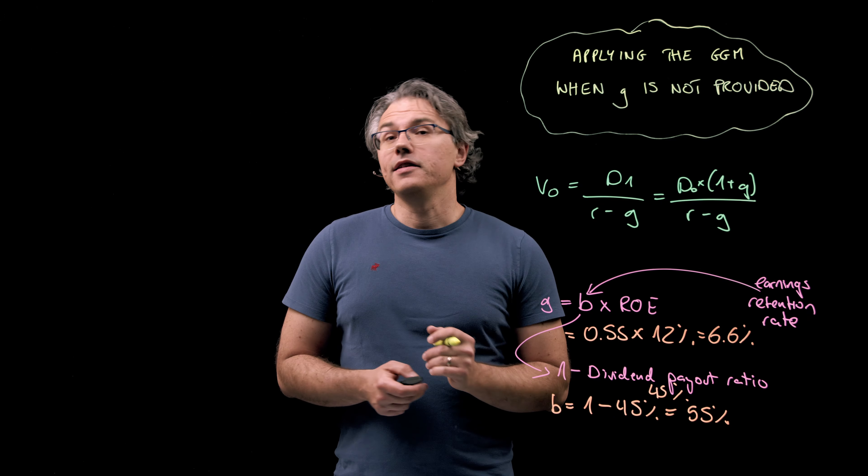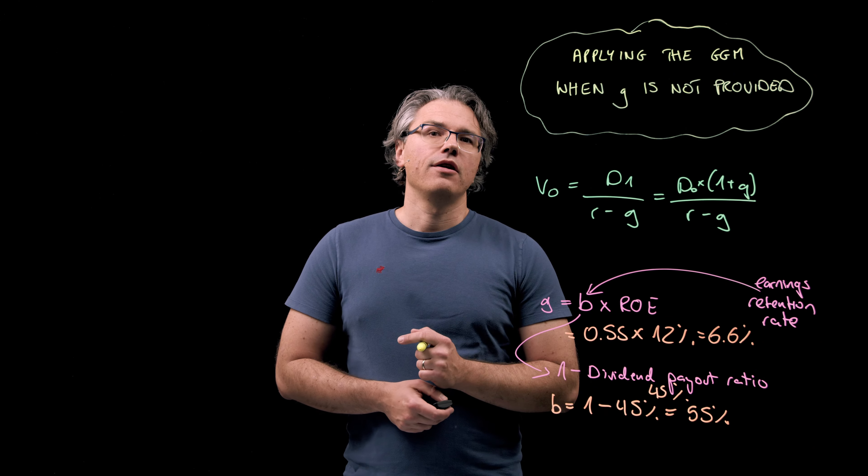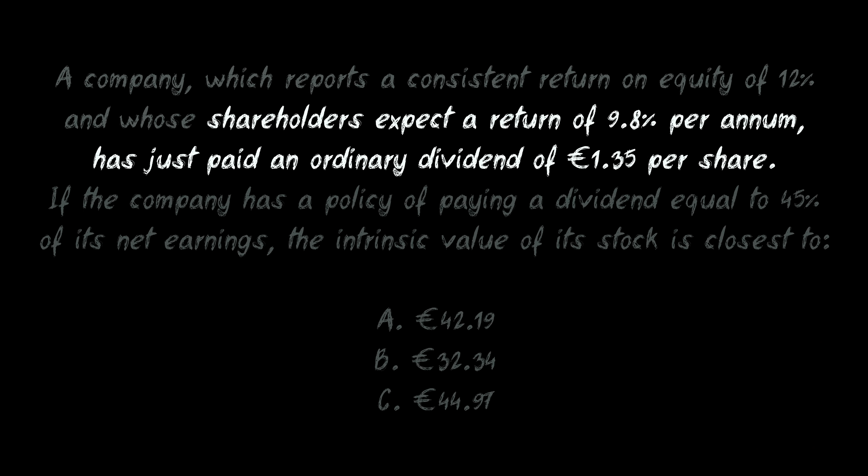Let's quickly check the remaining values from the scenario. Shareholders expect a return of 9.8% per annum, so that's R, and the company has just paid an ordinary dividend of €1.35 per share, so that's D0.